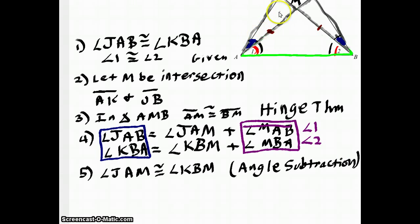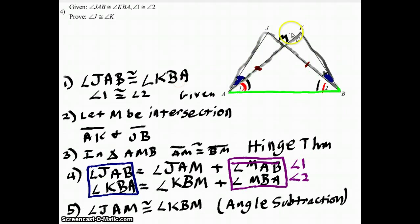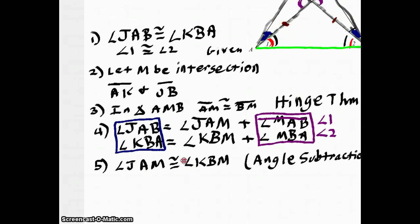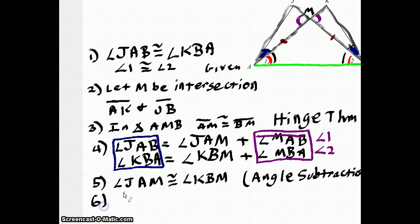From there, I see in this triangle that I have an angle and a side. If I look at the lines crossing here — going from J to B and K to A — they make an X, which means I have a set of vertical angles. So angle JMA has to be the same as angle KMB. My next statement is: angle JMA is congruent to angle KMB because of vertical angles.